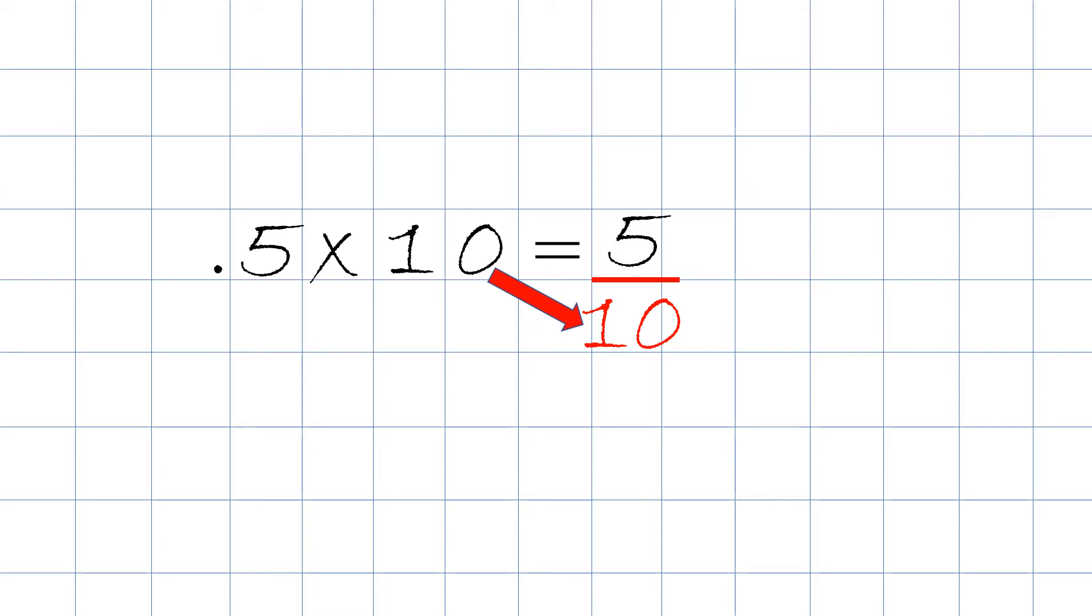Now the fraction is 5 tenths. However, we have to reduce it. We have to reduce the fraction. I hope you know how to reduce fractions, but if you don't, we do have a video for it. We know the greatest common factor, the GCF, of both 5 and 10 will be 5.